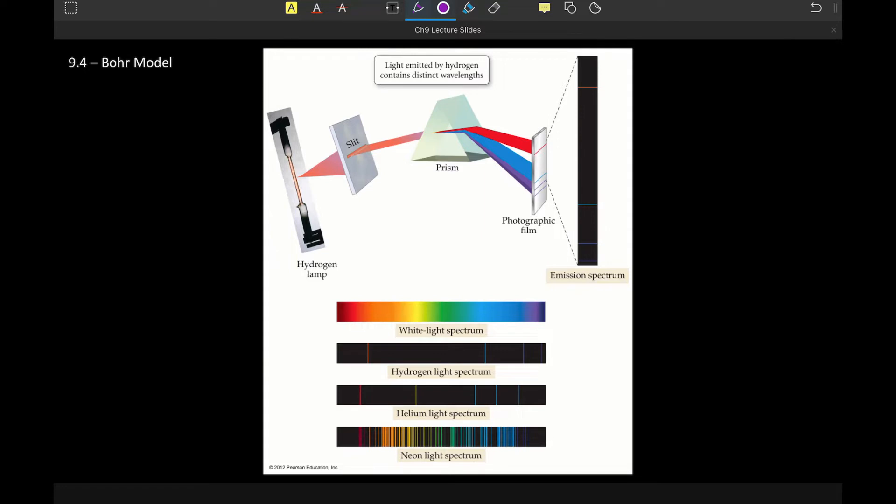So we said previously the whole point of this unit, the whole point of discussing light in this unit, is because the interactions between light and electrons give us information about what the inside of an atom looks like. And here is where we finally tease that out with the Bohr model.